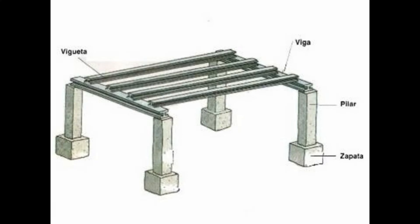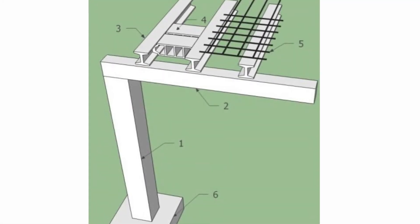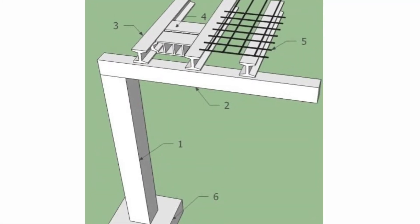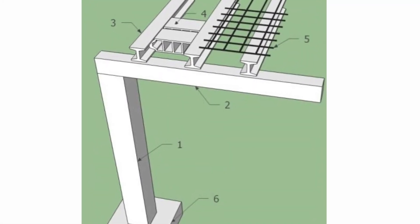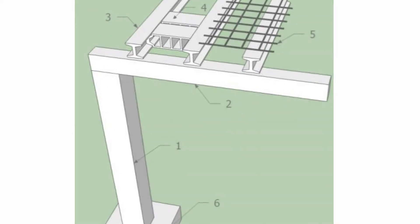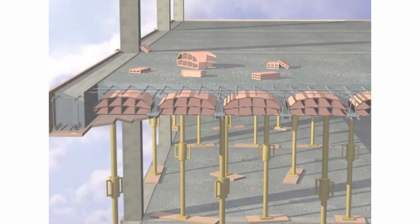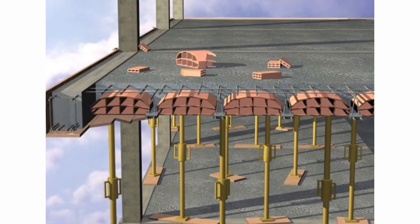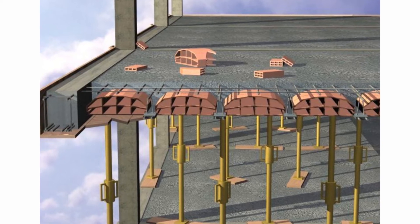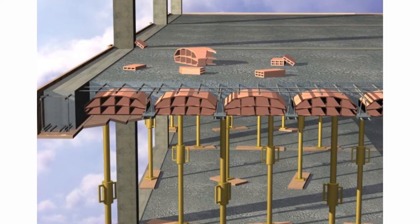Two porticos facing each other are joined by joists. Between the joists are some special blocks called vaults and a steel mesh above. It is then filled with concrete to obtain the slab that will serve as a ceiling or floor of the upper floor.